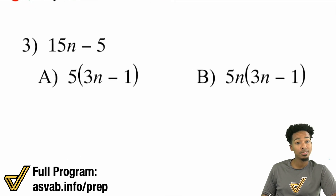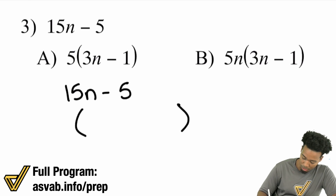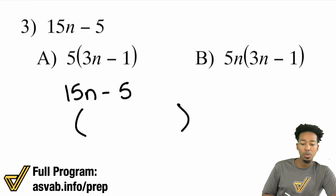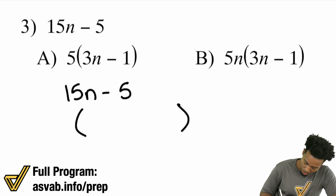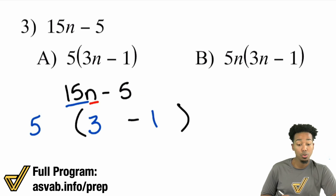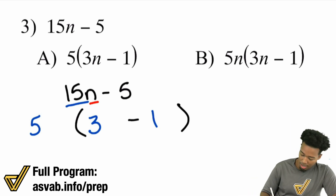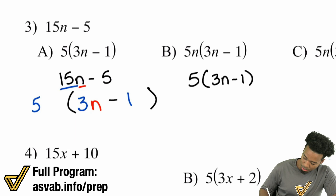Number 3, we have 15n minus 5. Let's rewrite it here — 15n minus 5. So what I'll do here is I'll go ahead and see what I can factor out, starting with the numbers. Between 15 and 5, what can I take out? What can I divide out? Well, 5 — 5 can multiply to 15, and 5 can multiply to 5, because that's 5 times 1. So I'll take out 5. 15 divided by 5 is 3. Let's not forget that minus sign. And 5 divided by 5 is 1. Now let's worry about the variables — the n. Well, notice there's no n over here, so you actually can't take out the n, because you have to have that variable shared. It's not happening. So you can only pull out a 5 from here. They don't have any common variables, but they do have a common number, so that's going to be 5, parentheses, 3n minus 1.